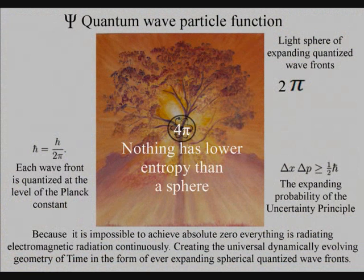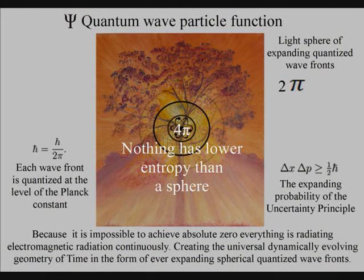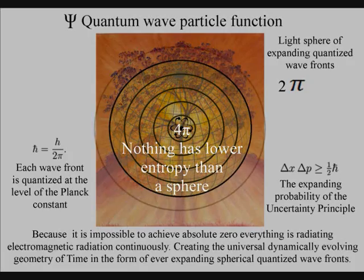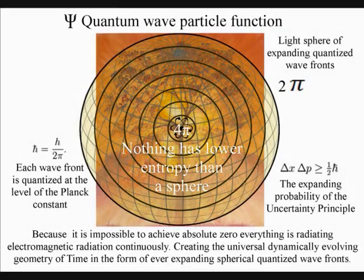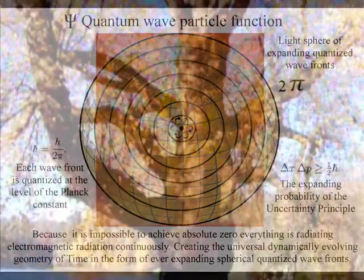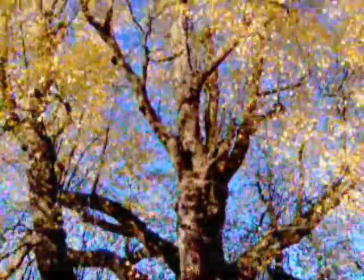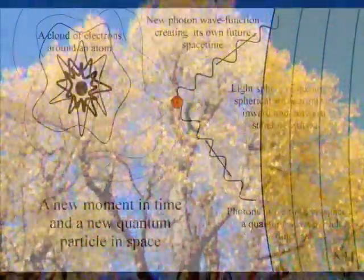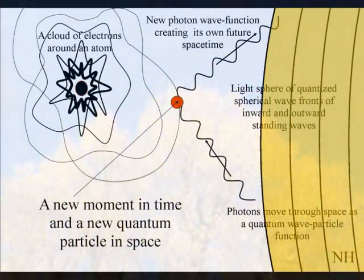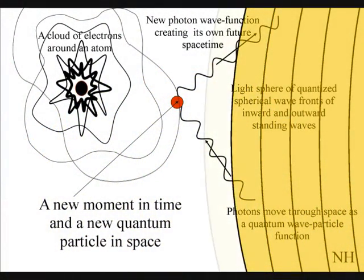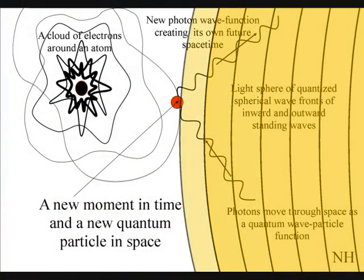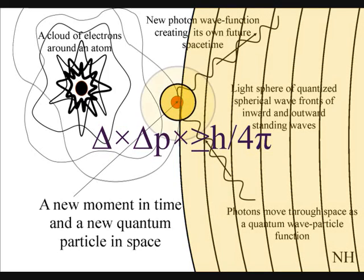The second law of thermodynamics falls out of this theory. The organization for the spontaneous disorganization of entropy is formed by the spherical symmetry of the quantum wave particle function. The spontaneous absorption and emission of light forms the flow of time, with photon energy cascading down, forming greater degrees of freedom for the flow of entropy.